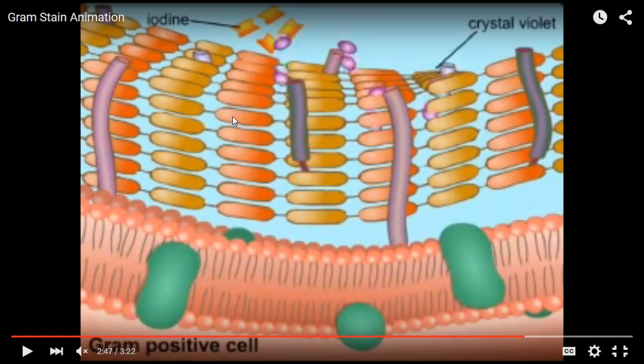Peptidoglycan is that molecular structure we call the cell wall — it's made up of sugars and amino acids and creates a rigid structure, very much like a brick wall. But unlike a brick wall, this one has gaps, so I equate it to a wicker basket: rigid enough to hold shape but lets stuff in and out. That has to happen for a cell to survive — you need nutrients in and waste out. So crystal violet goes through those gaps and enters the cells; the iodine goes in too, and those two molecules bond together.